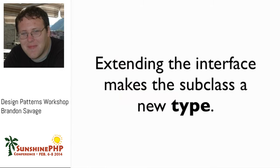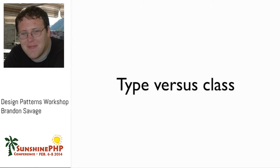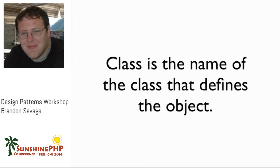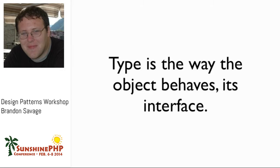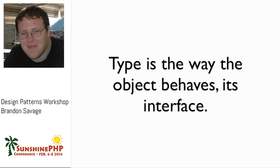Let's spend a little time talking about what type and class mean. A class is the name that defines the object - when you say `class SomeName`, that class name is the name of the object. Type, on the other hand, is the way an object behaves - the way other objects know it through its interface. The type of an object is based on what public methods are available, not on class name or anything else. It's based on how your object behaves.